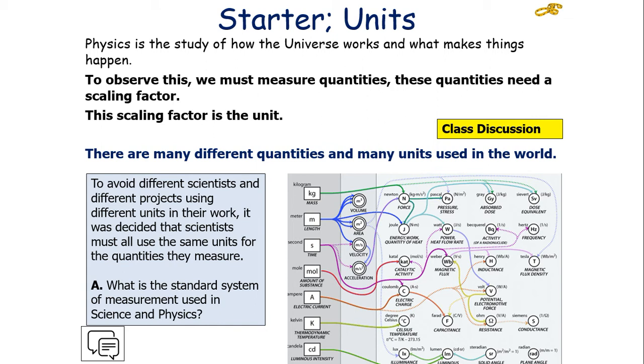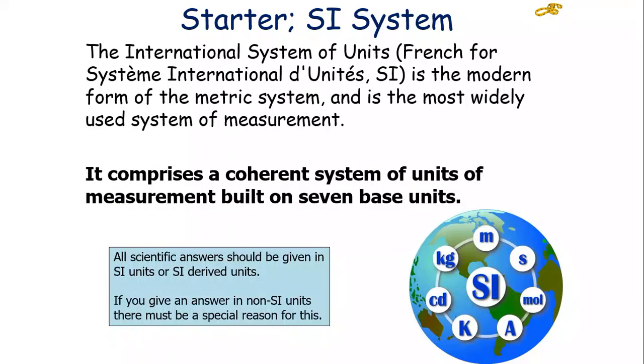As we mentioned before, we've got to look at the different units used in physics. To avoid different scientists and different projects using different units in their work, it was decided that scientists must all use the same units for quantities that they measure. And this standard system of measurement used in science and physics is called the International System of Units, or Systeme Internationale des Unites, or SI.